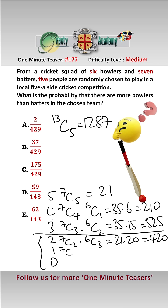For just one batter well there's seven ways of picking that 7C1 and the other four would have to come from the bowlers and that equals 7 times 15 which is 105.